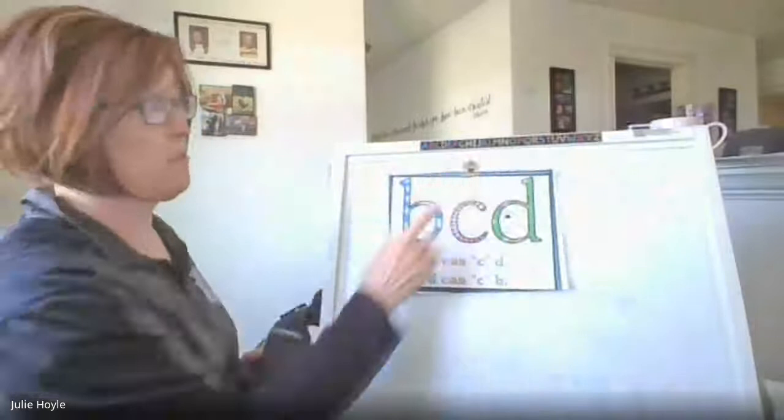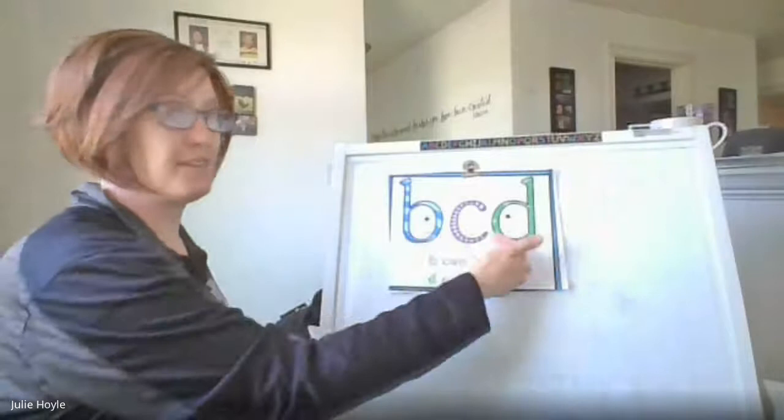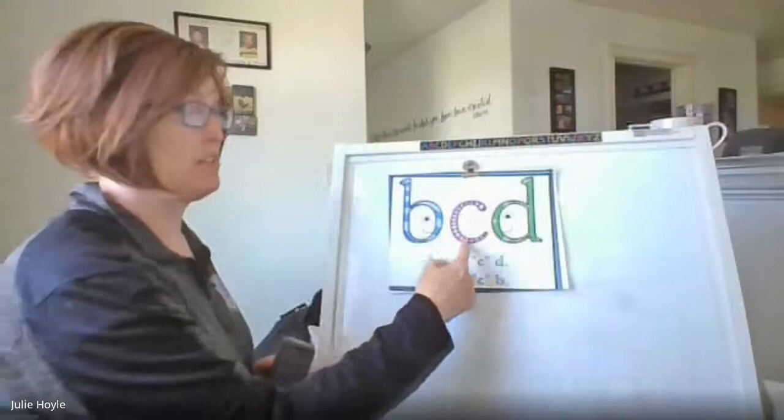Another one is if they're together like this, b does the walking while d is turned around doing the talking. So when they're facing each other, b does the walking while d does the talking.